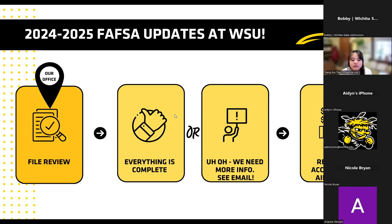There are only two routes after we review everything. One, your FAFSA could be great — everything is good and complete — and you receive an official financial aid letter in your mail, which will also be on your financial aid dashboard. Or if there's something we need, it's not something you did wrong, we just need more information from the Department of Education, and we're going to reach out to you via email or on your financial aid dashboard saying we need more information. Please submit that as soon as possible so we can award you your aid offer.